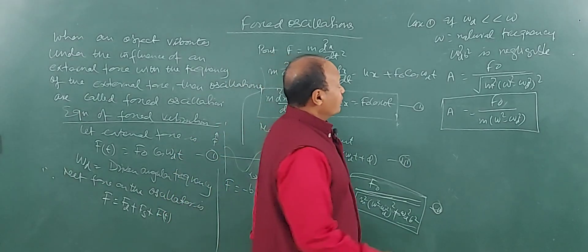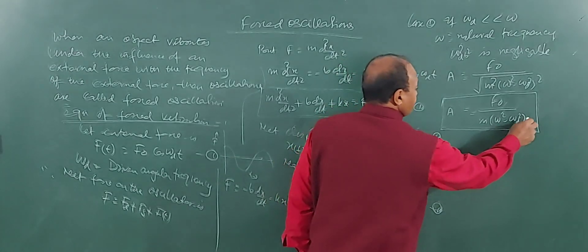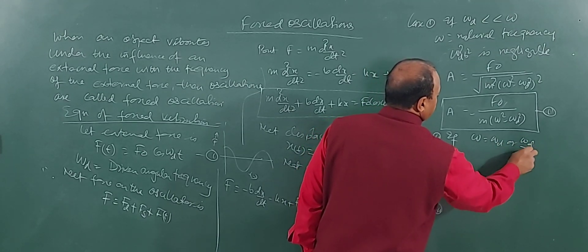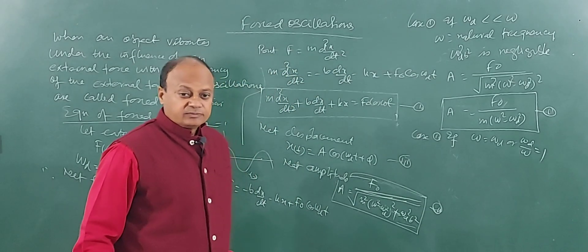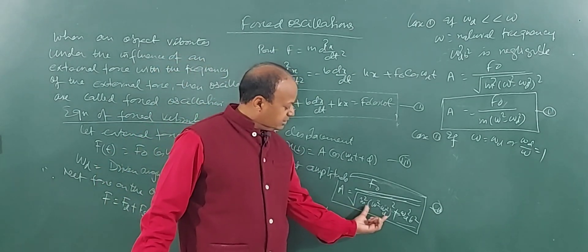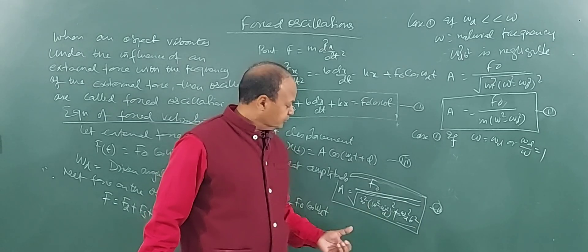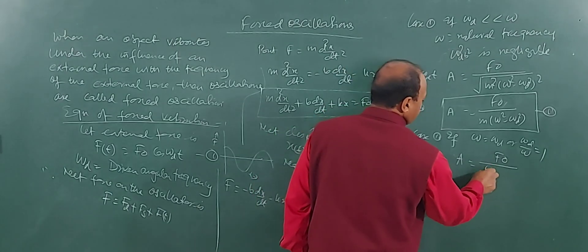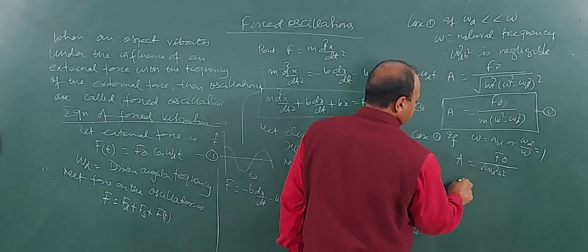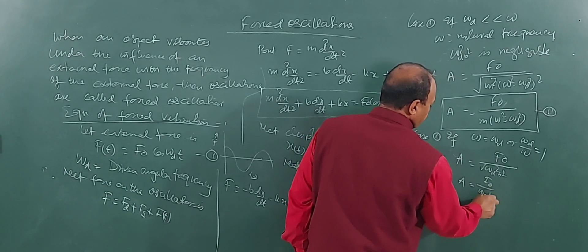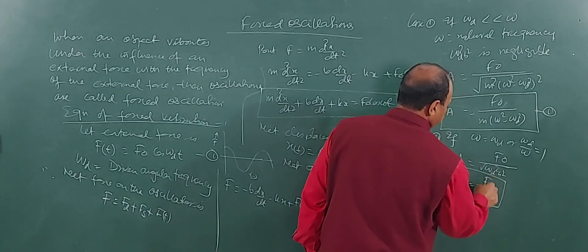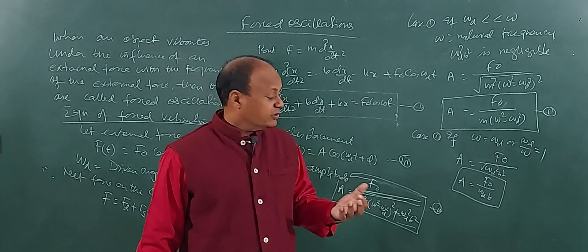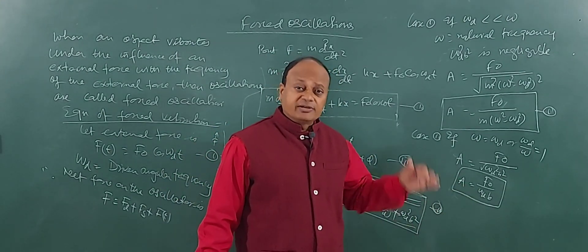The second case is very interesting — equation 5: if omega equals omega d, or ωd/ω equals 1. If ω equals ωd, then the term m²(ω² − ωd²)² becomes zero. So the amplitude A becomes F₀ divided by the square root of ωd²·b², which equals F₀ divided by ωd·b. In this case, you can see the amplitude becomes very large.